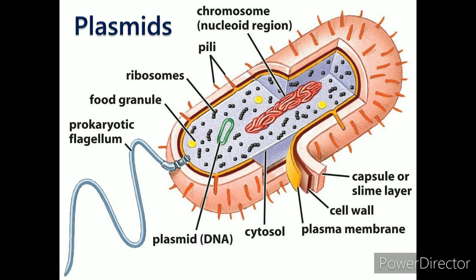Plasmids. A plasmid is a small circular piece of DNA that is different than the chromosomal DNA, which is all the genetic material found in an organism's chromosomes. It replicates independently from the chromosomal DNA.